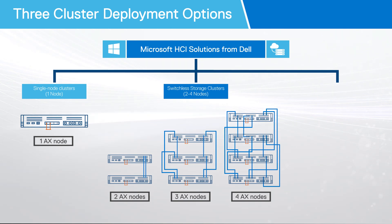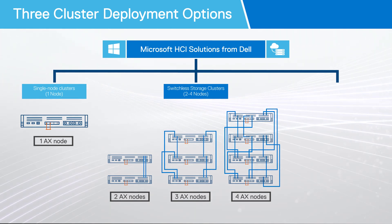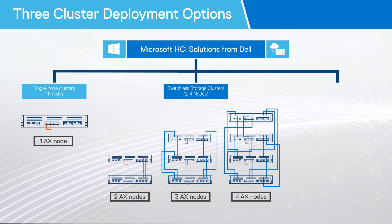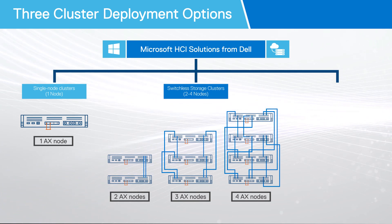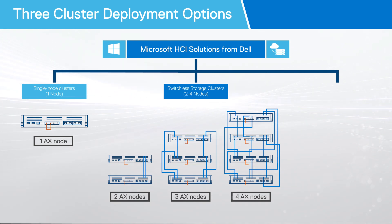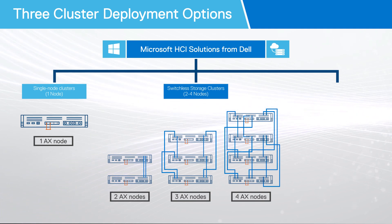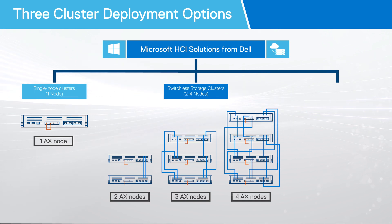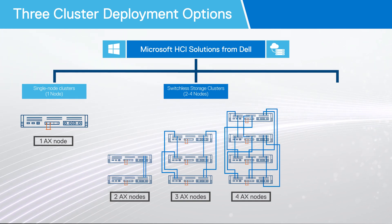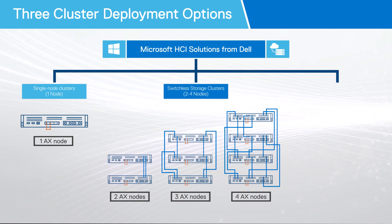A full-mesh interconnect requires direct network cable connections between every cluster node. For redundancy and performance purposes, dual-link direct network connections between every cluster node are recommended. Before deploying a full-mesh switchless storage cluster, the size should be carefully considered. Dell will not be validating, supporting, or providing guidance around the expansion of a switchless storage topology deployment.